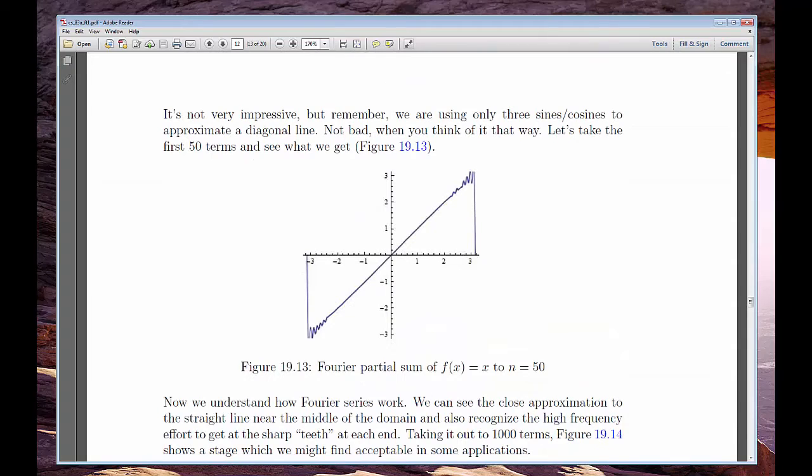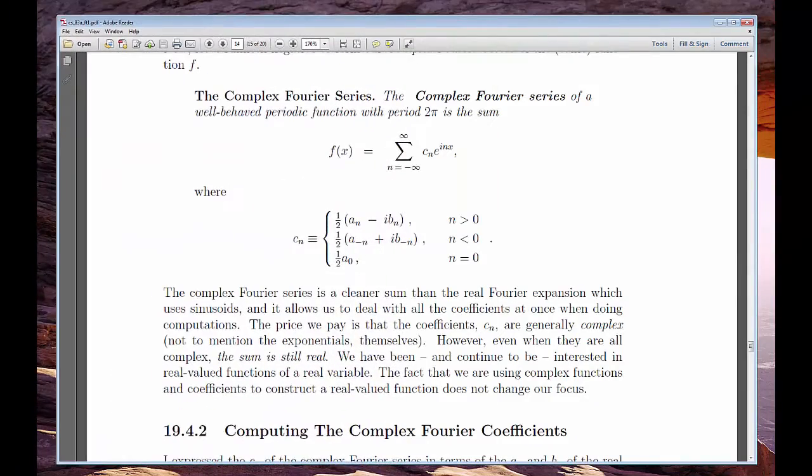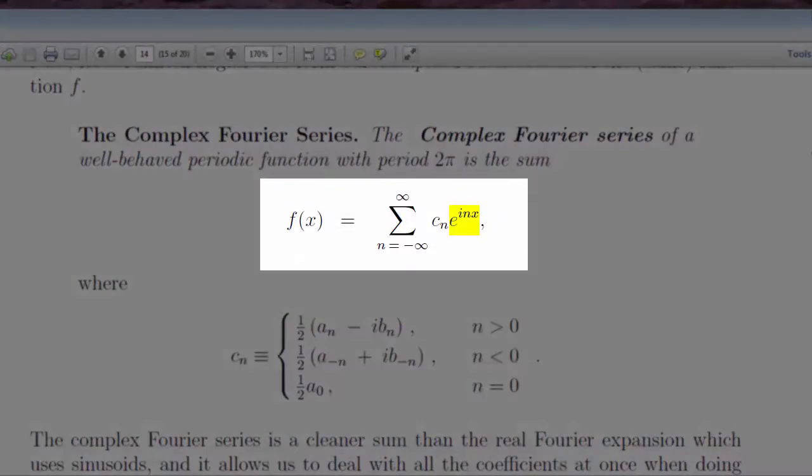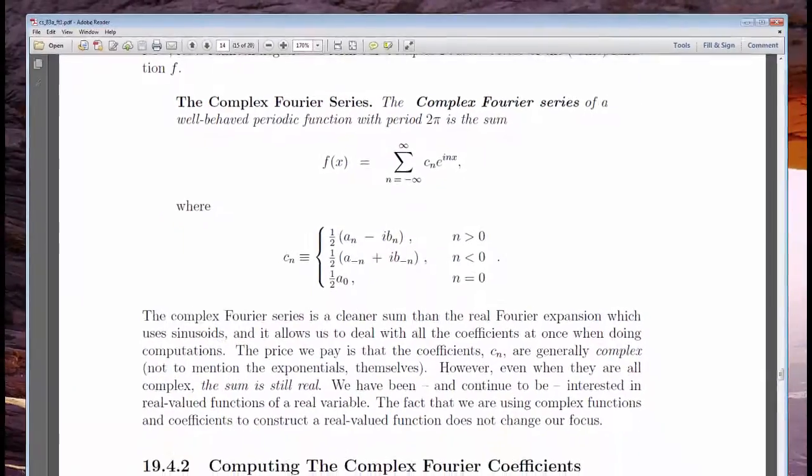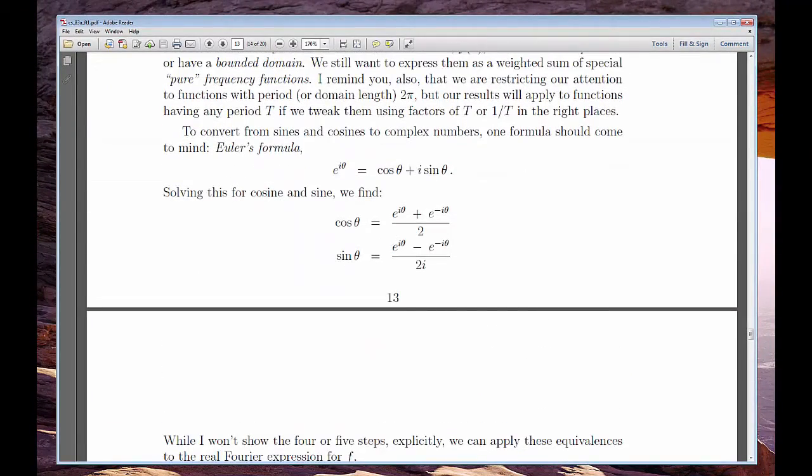A worthwhile variation of Fourier series for us is the complex form, which uses exponentials instead of sinusoids as the pure frequencies out of which we build functions. The way to understand this is by remembering the close connection between sinusoids and exponentials, Euler's formula.